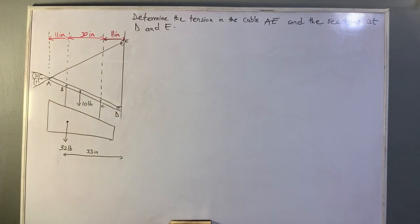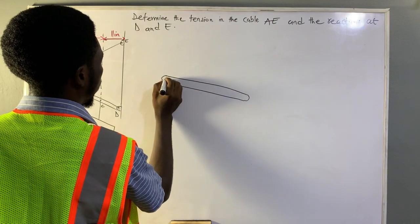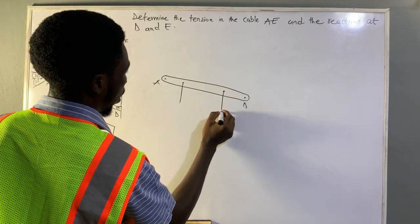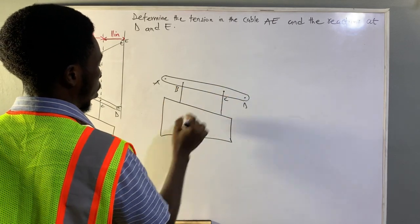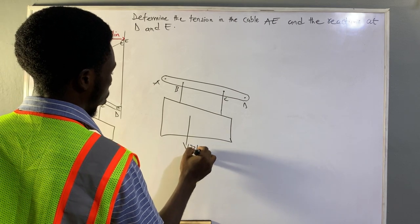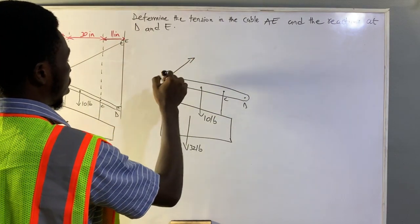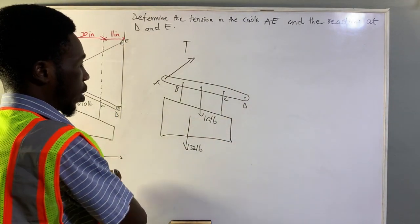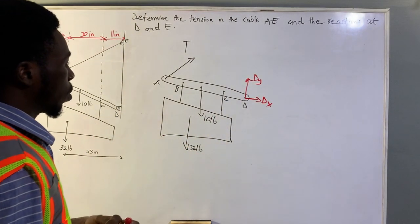We will start by drawing the free body diagram for the given figure. This is point A, this is point D, and we have the signage here. This will be point B and point C. The signage has a weight of 32 pounds and the bar has a weight of 10 pounds. The tension rope is in this direction, labeled as T, and at point D we have reaction forces Dx and Dy.